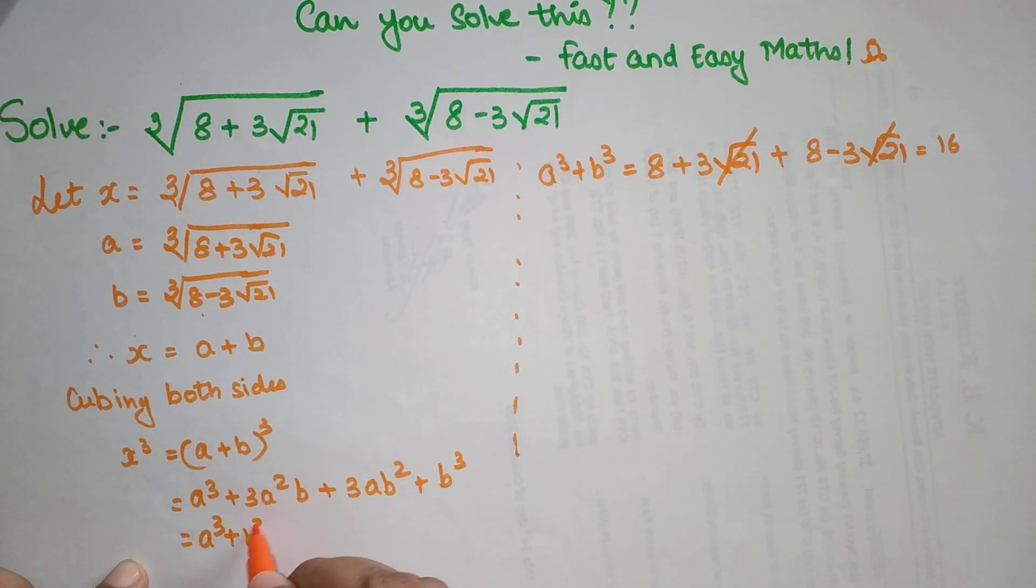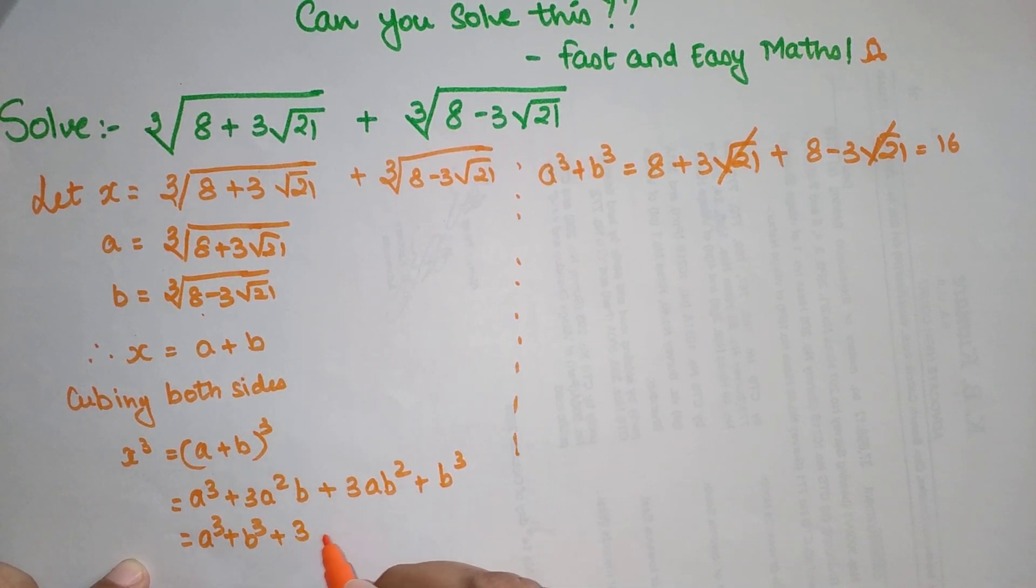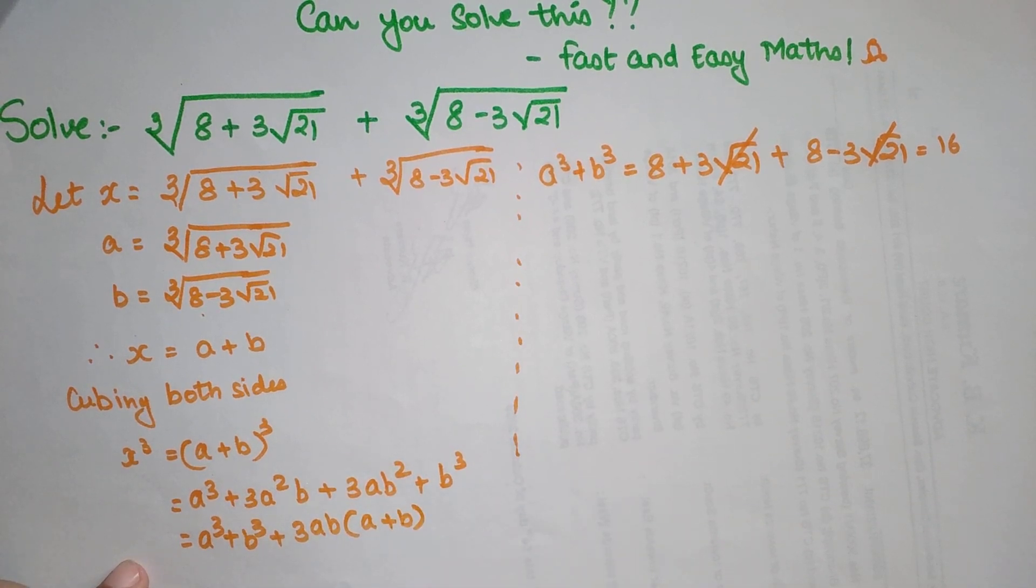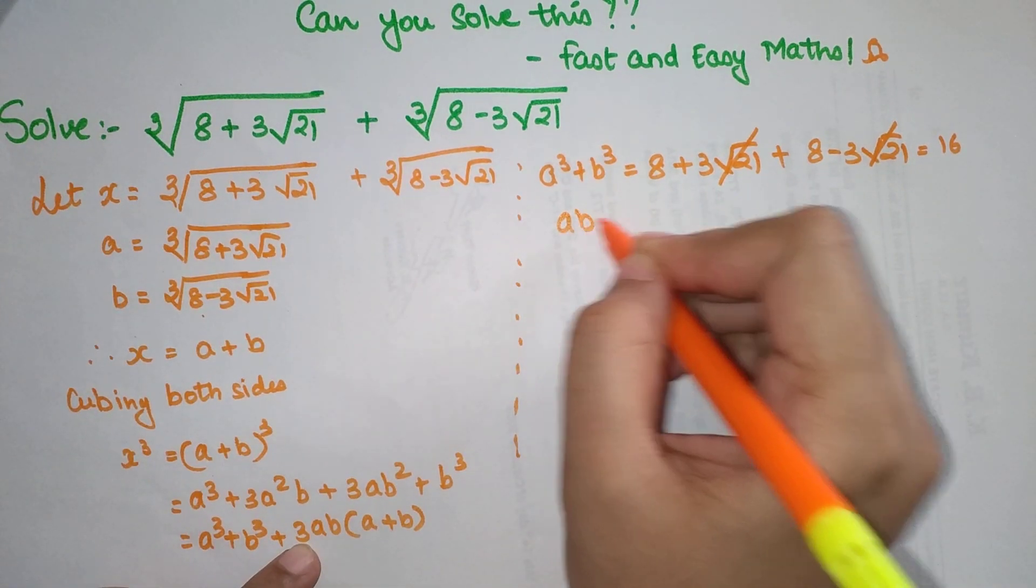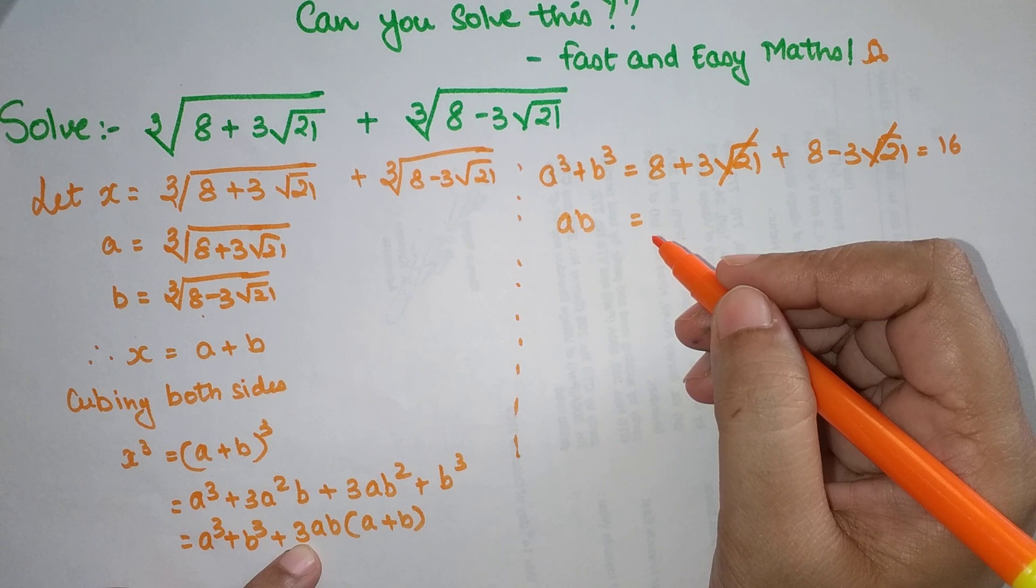Now over here I can write a cube plus b cube first together and I can take something common from this. I can say 3ab common and I'm just left with a plus b. So here if you look, I have ab as a term.